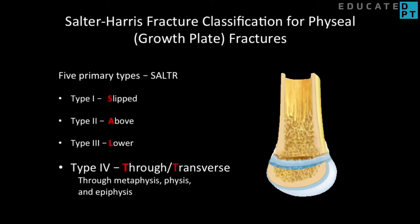Type 4 is remembered as 'through' or 'transverse' and affects the metaphysis, physis, and epiphysis. This type may lead to bony deformity.